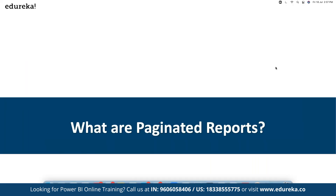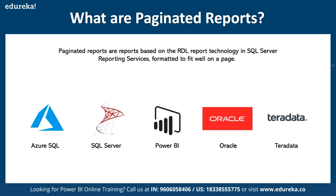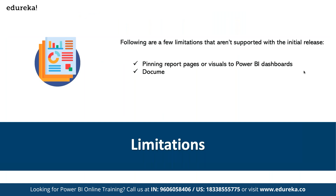We are also going to discuss the concept of paginated reports as a part of Power BI. Paginated reports are based on RDL report technology from SQL Server, used as part of reporting services, and are formatted to fit well on a page. Multiple data sources are supported including Azure SQL and SQL Server. There are certain limitations — for example, you cannot pin paginated reports to a Power BI dashboard, document maps are limited, drill-through reports are not available, and shared data sources and shared datasets are also limited.